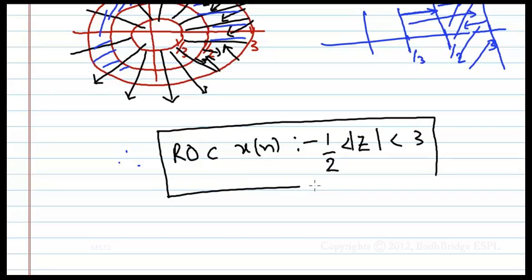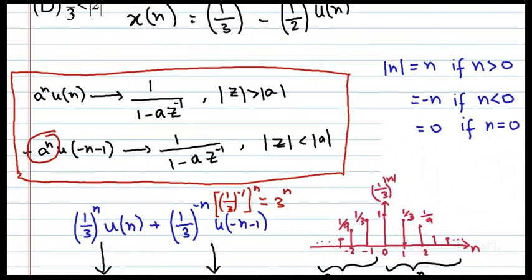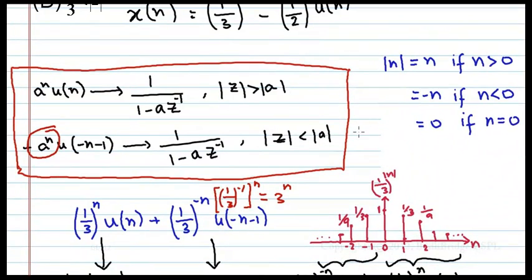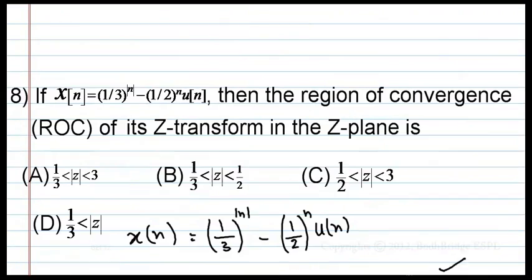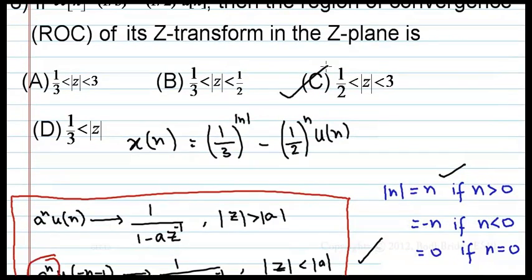The important concepts in this question are the Z-transform pairs a^n · u(n) and -a^n · u(-n-1), and the understanding of |n|. The final ROC of x(n) is 1/2 < |z| < 3, so the answer is option C.